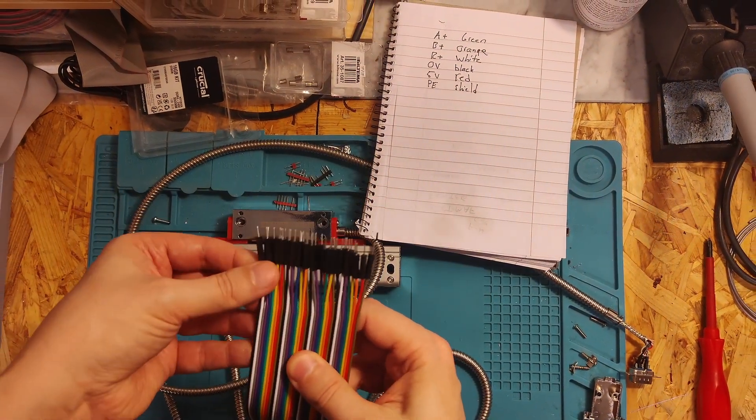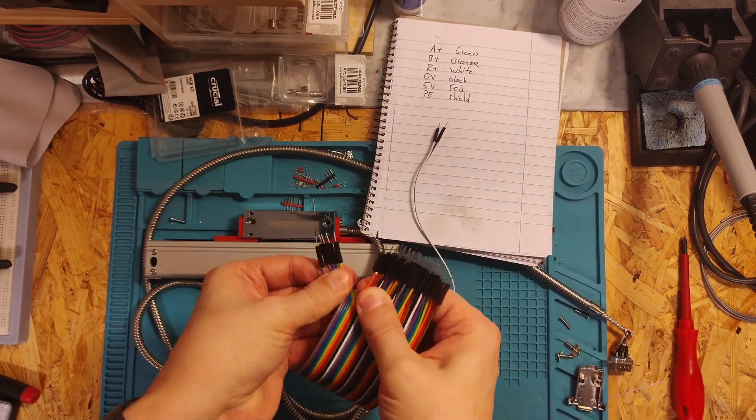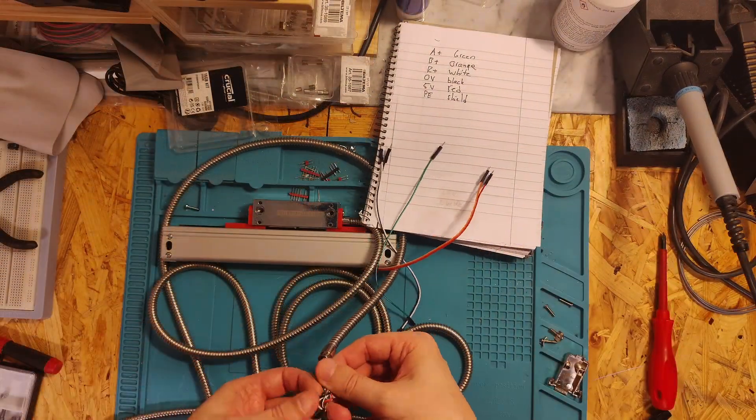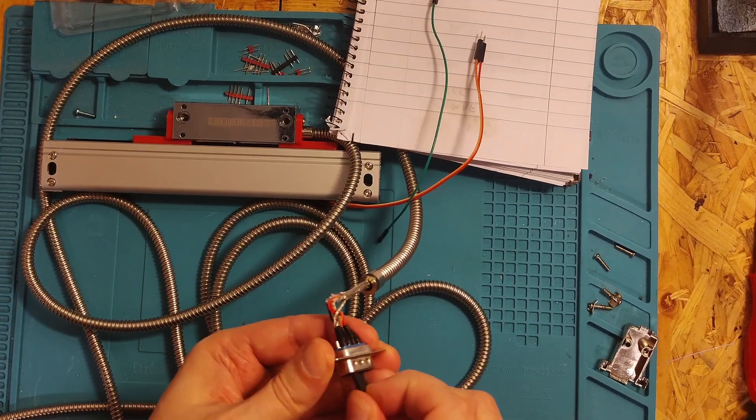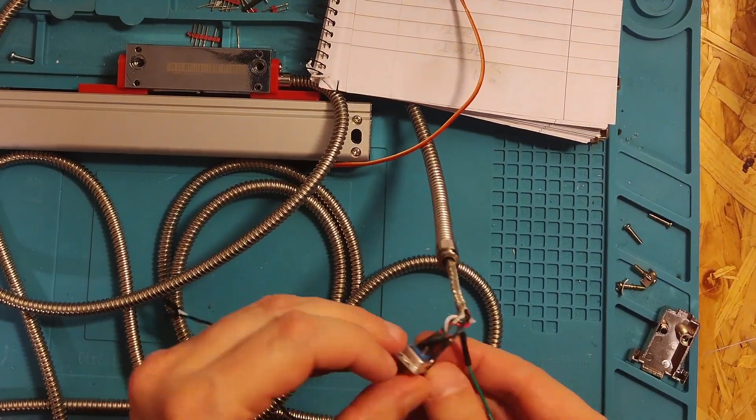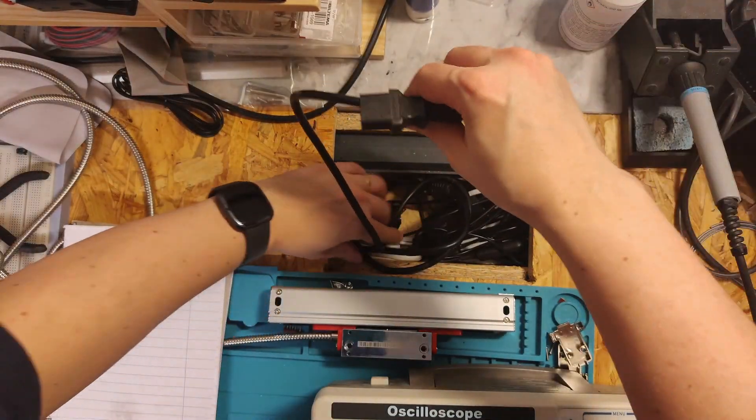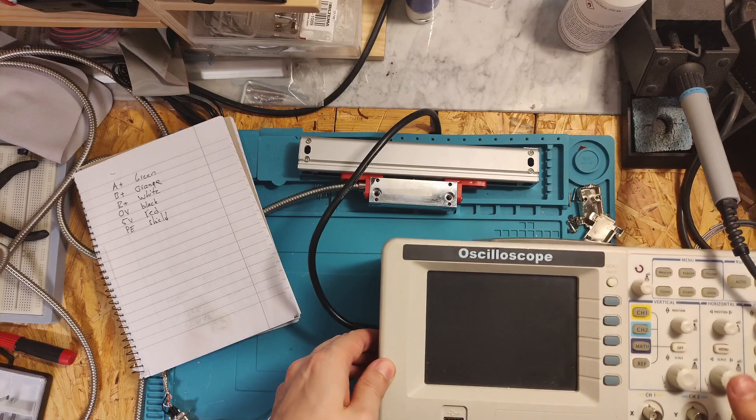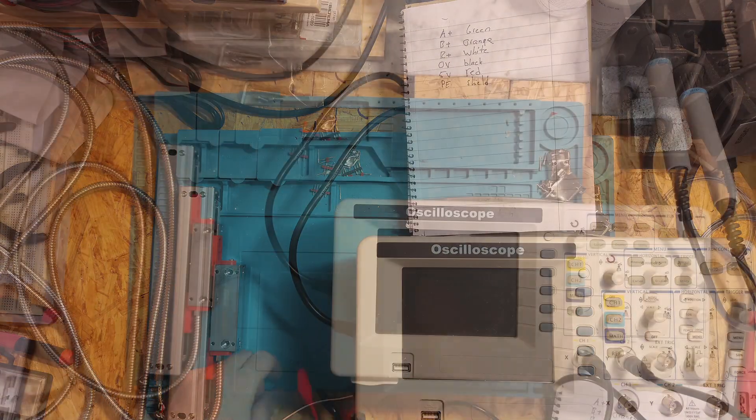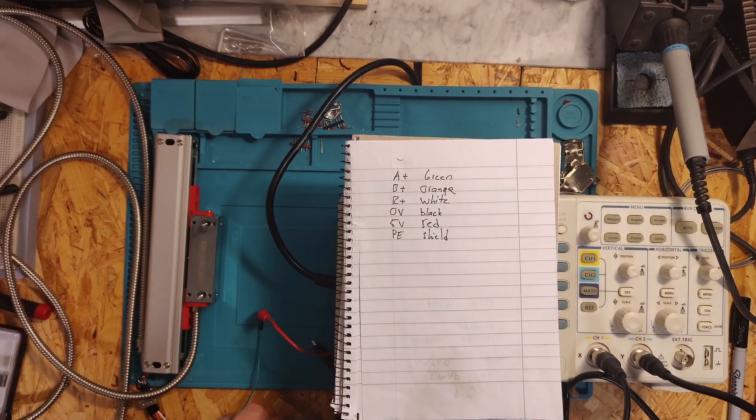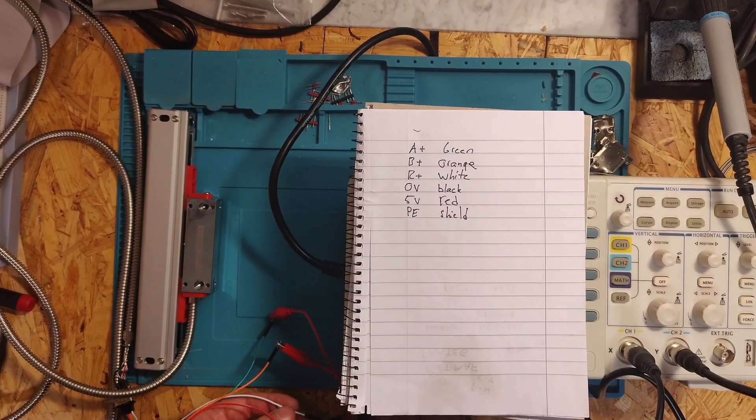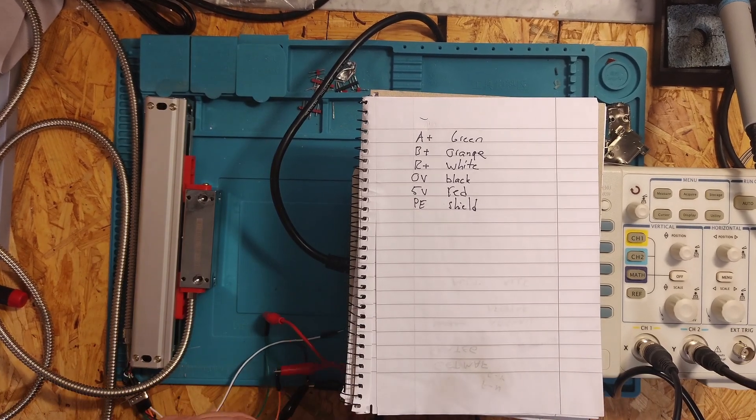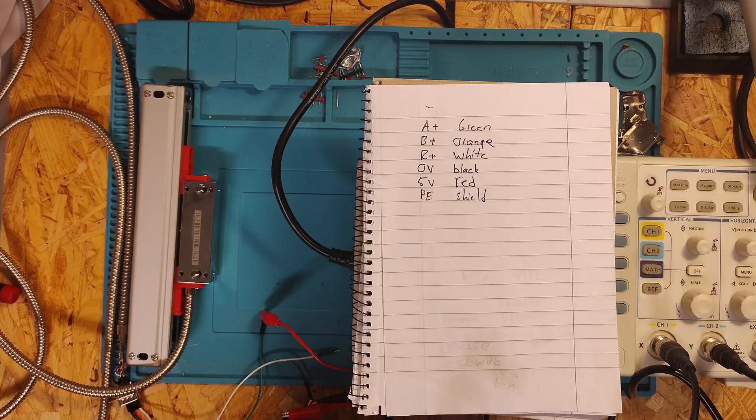Let's get some wires so that we can do a few measurements. Let's connect A+ and B+ to the oscilloscope and 0 volts and 5 volts to the power supply. The shielding is of course irrelevant, and I believe that the R+ is maybe for counting revolutions or the end stops, which is not of interest to us.